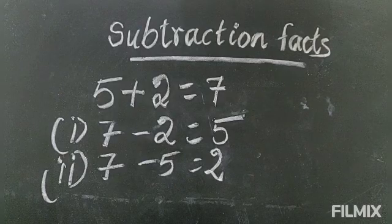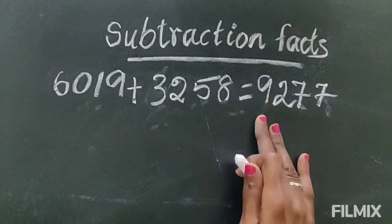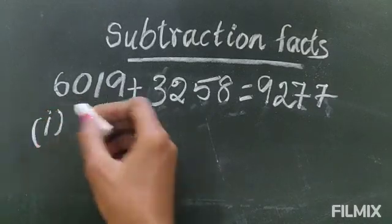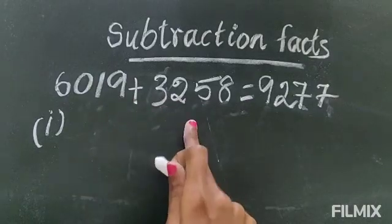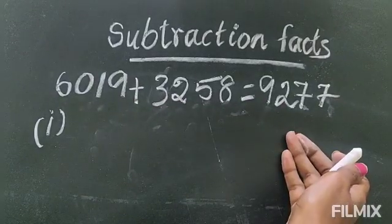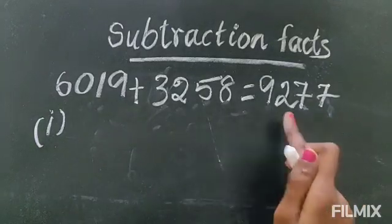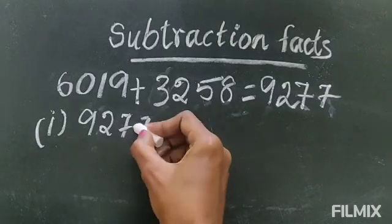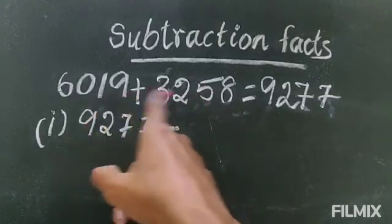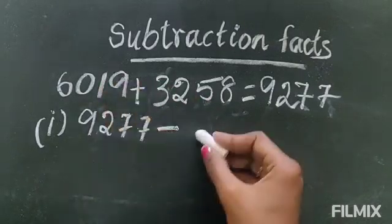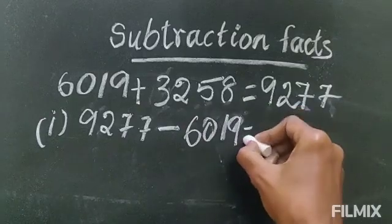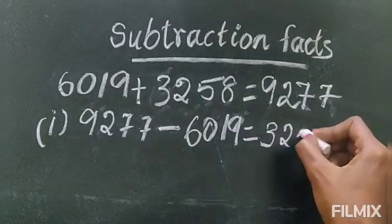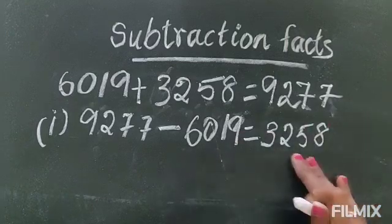Now let's go with higher digits. Here the addend is given. Let's write the subtraction fact. To write the subtraction fact, you take the bigger number — here 6000, here 3000, here 9000, so surely 9000 is the bigger number. Otherwise you see after the equal sign what is there — that you write first. So the bigger number is 9277. From there you minus any one of the addends. I am taking the first addend 6019. The answer will be — you need not sit and calculate — the second addend: 3258.